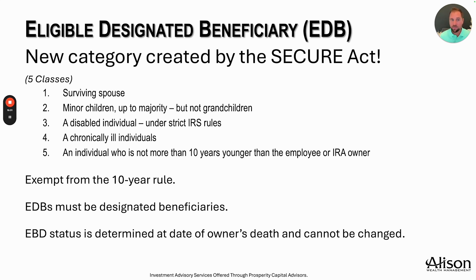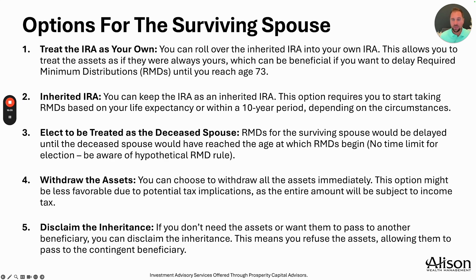If your spouse passed away and you're a surviving spouse of a retirement account, there are really five options. Option one: you could treat the IRA as your own, or roll it over into your own IRA, allowing you to treat the assets as if they were always yours. This could be beneficial if you want to delay required minimum distributions until you reach age 73. Option two: you could keep the IRA as an inherited IRA, which requires you to start taking RMDs based on your life expectancy or within a 10-year period, depending on circumstances — specifically how old your spouse was and whether they had reached their required beginning date.